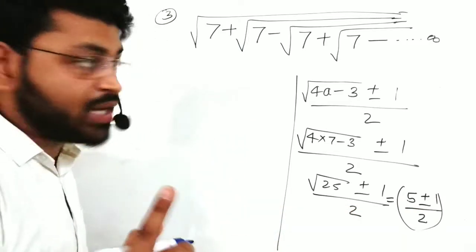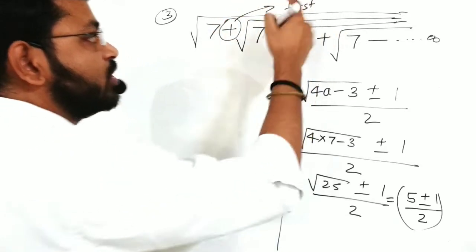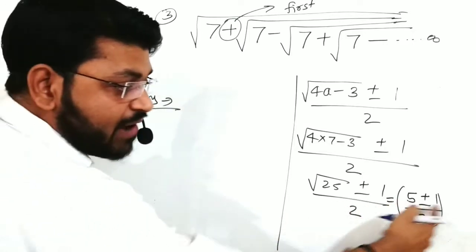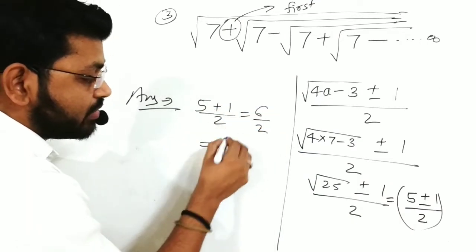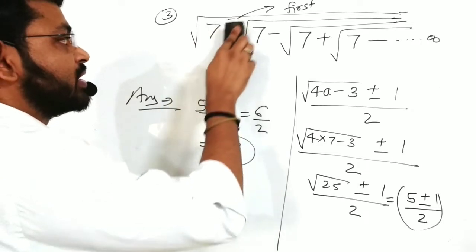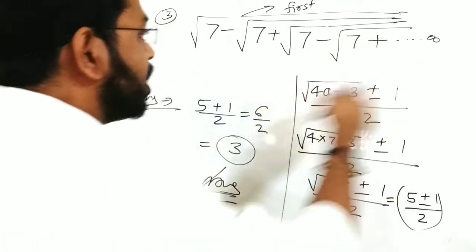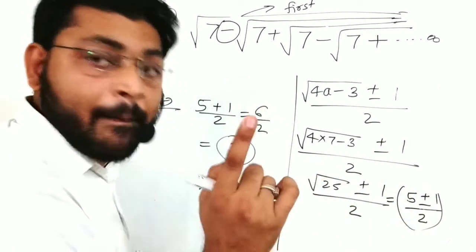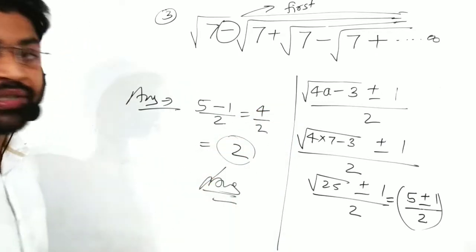The plus or minus in the formula depends on the first sign in the question. If the first sign is plus, use plus; if the first sign is minus, use minus. So with first sign plus: (5 + 1) / 2 = 6/2 = 3. That is your answer.